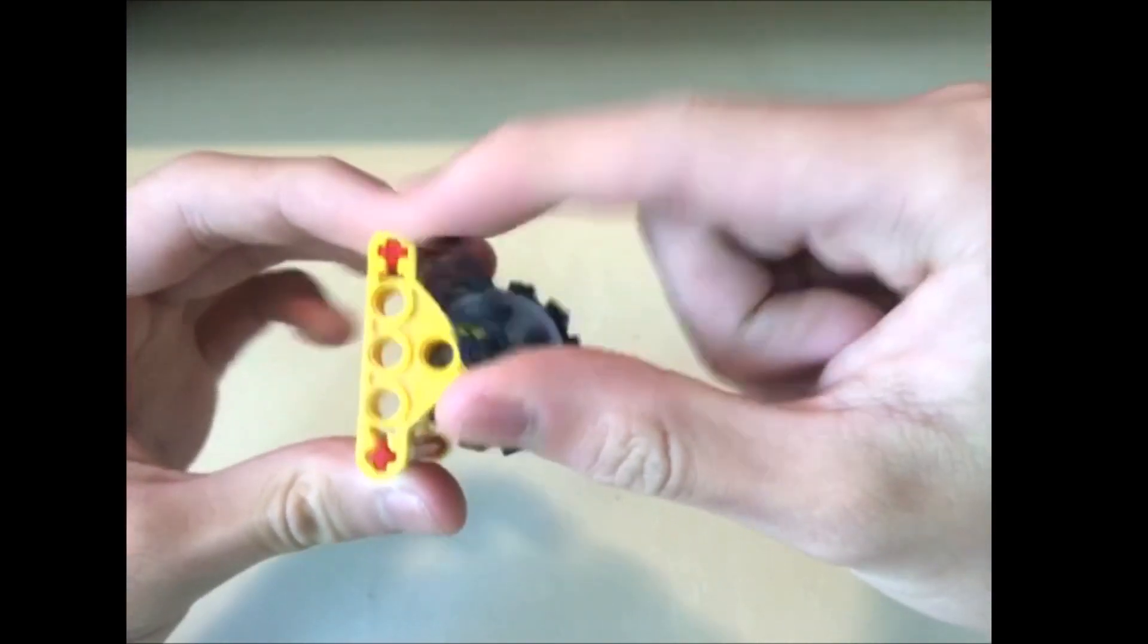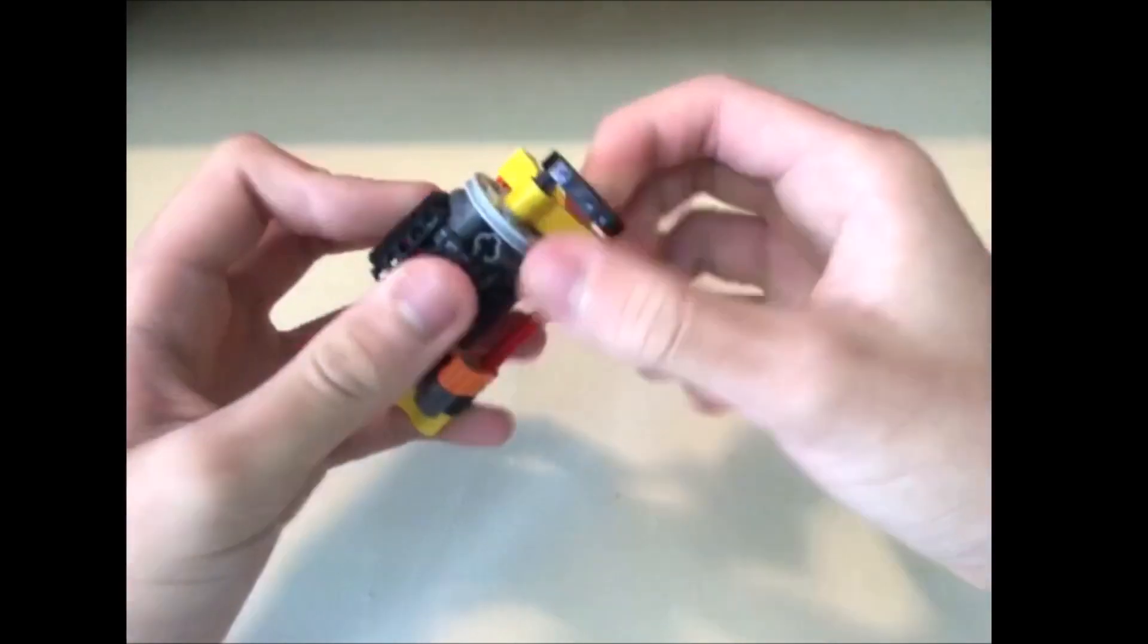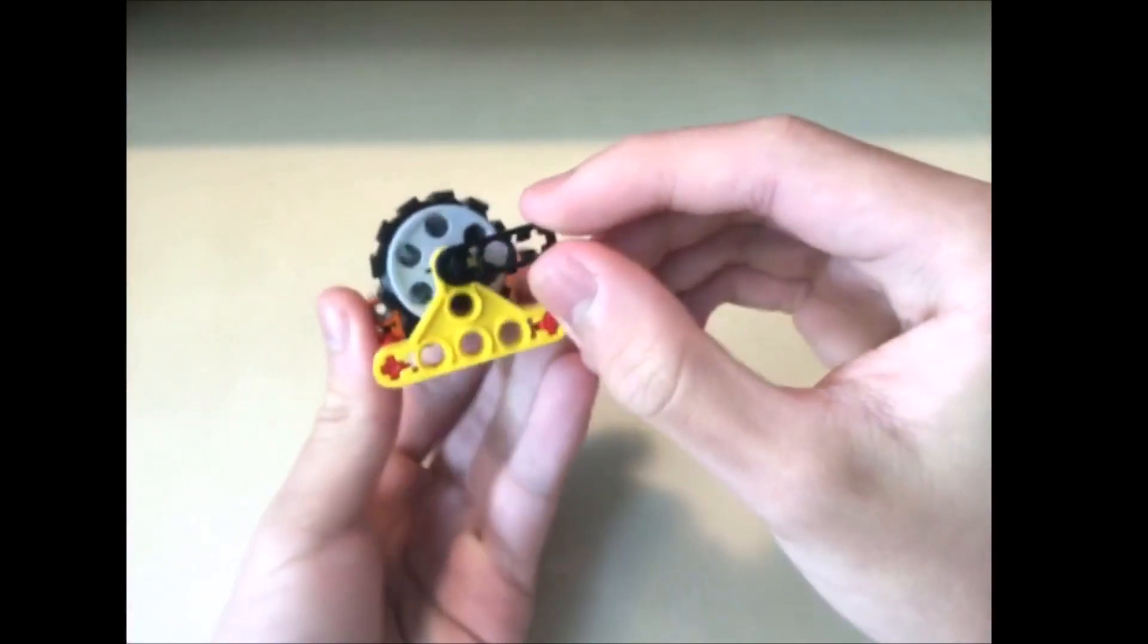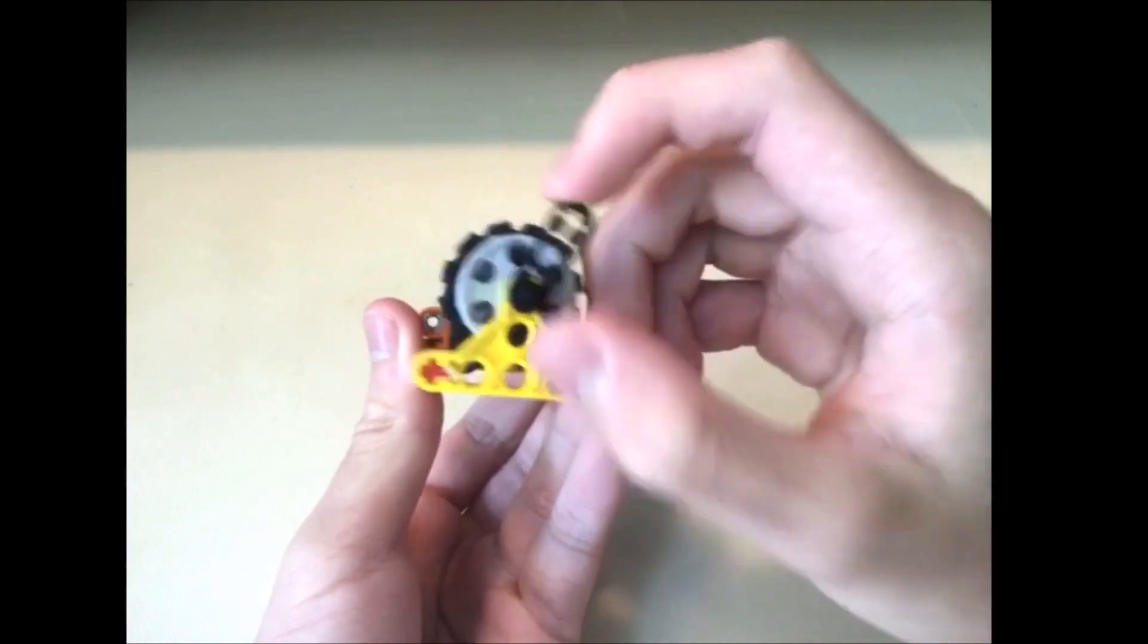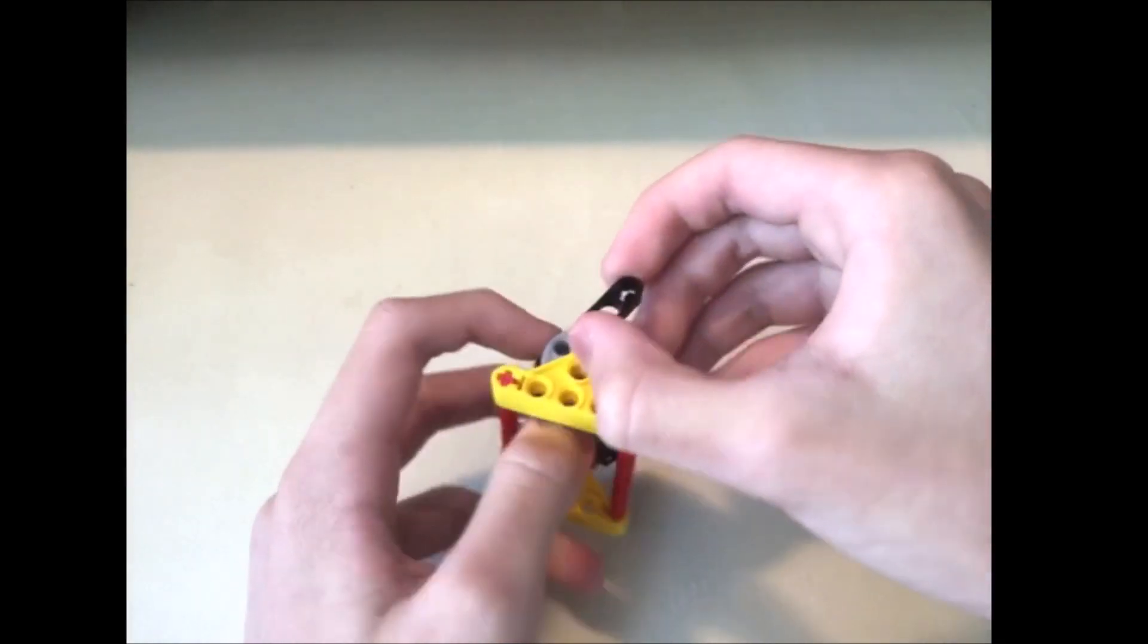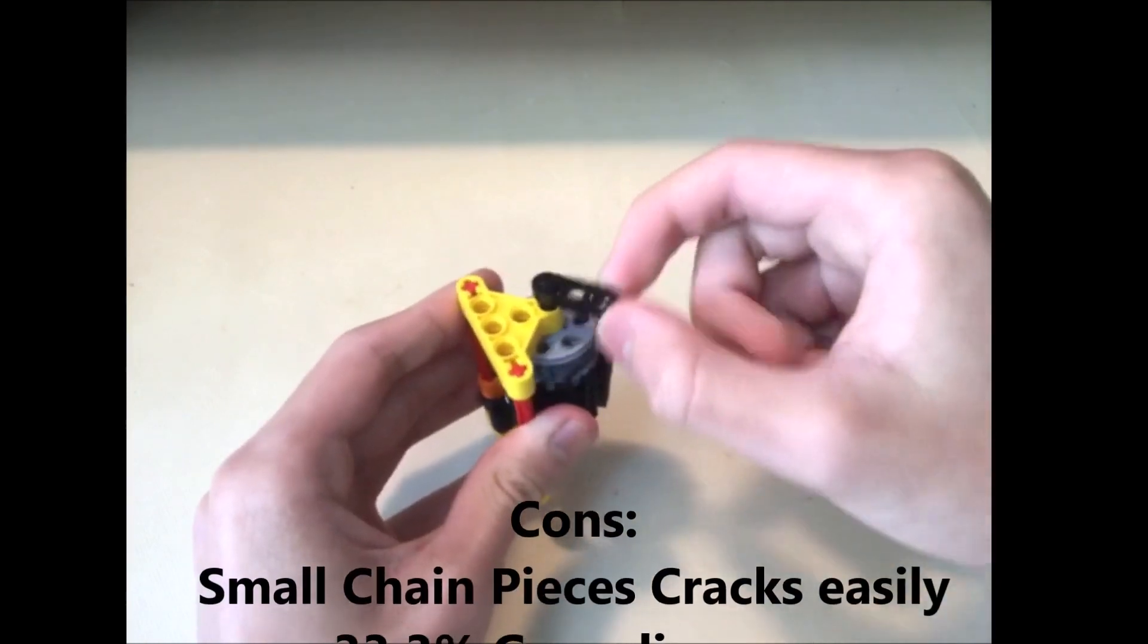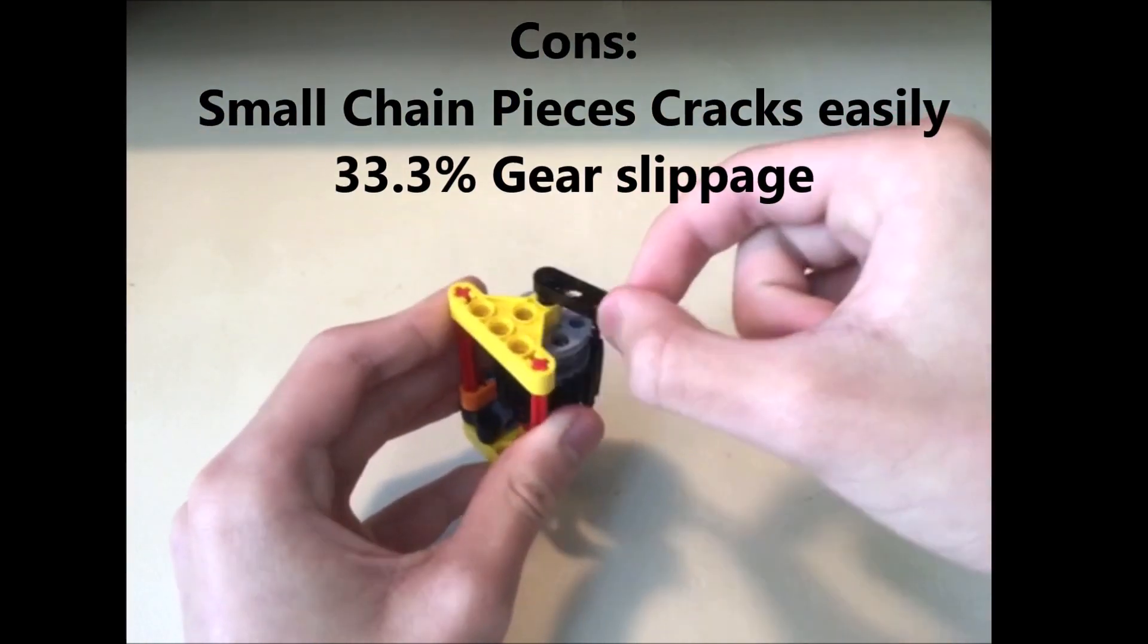It might be better than the first gearbox, but it's still a big problem. I've tried and tested it many times, and I found that it has nearly 80 degrees of gear slipping backwards. So the gear slippage of this gearbox is like 33%. And I'll say this is a creative, but a poor design.